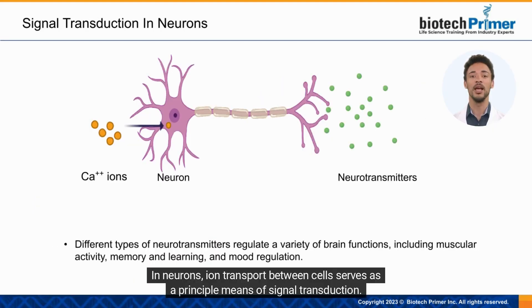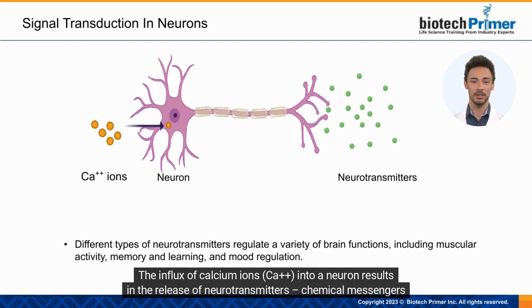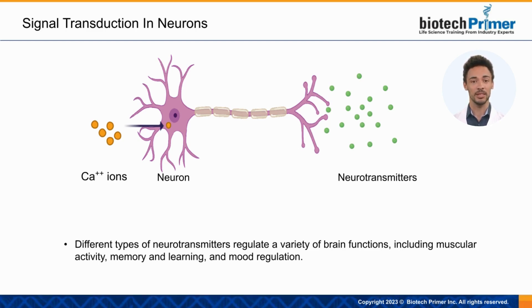In neurons, ion transport between cells serves as a principal means of signal transduction. The influx of calcium ions into a neuron results in the release of neurotransmitters, chemical messengers specific to the nervous system.